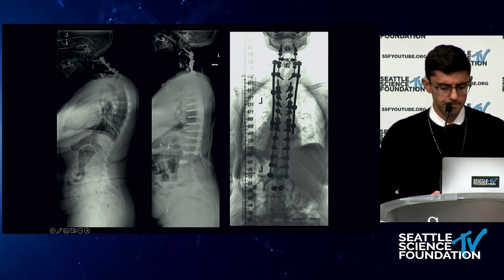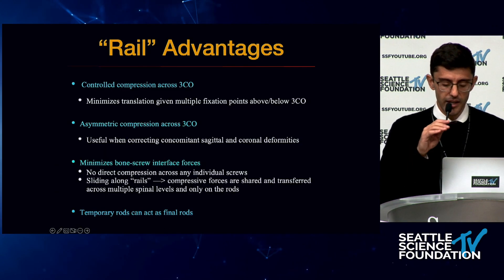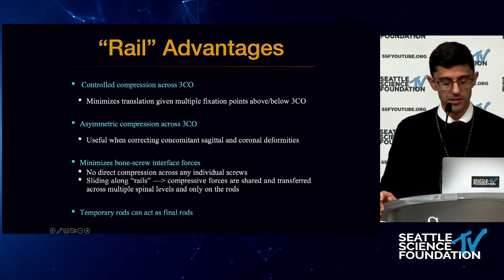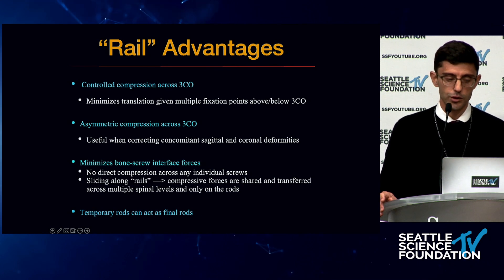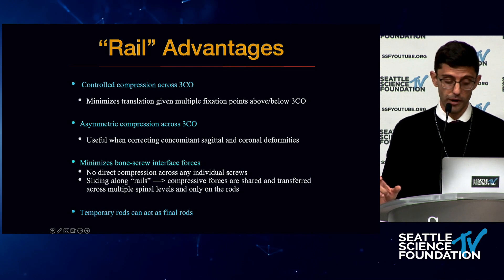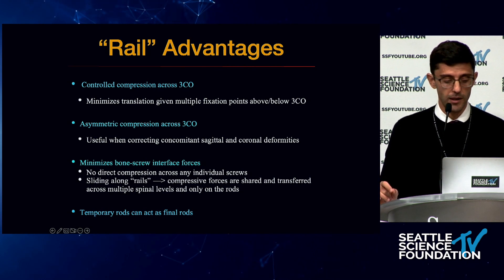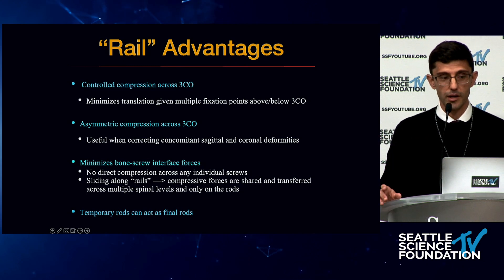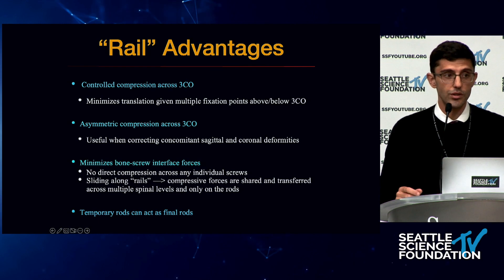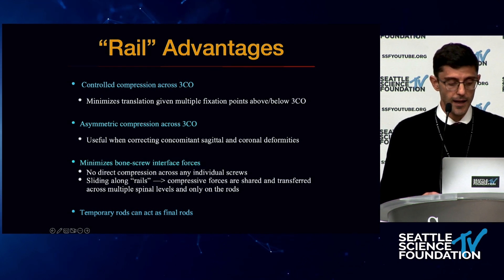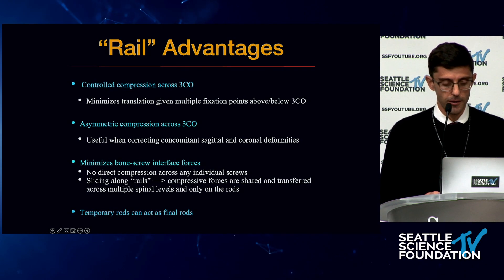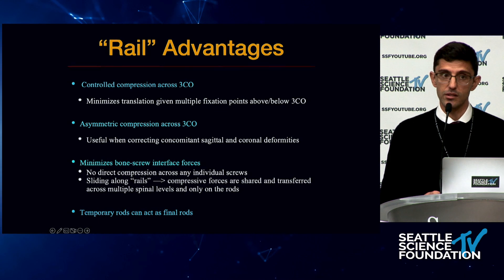The advantages of the rail technique: it provides controlled compression across the three-column osteotomy site, minimizes translation given multiple fixation points above and below, allows asymmetric compression to correct both sagittal and coronal deformities, minimizes bone-screw interface forces with no direct compression across any individual screws, and stresses are transferred along the rails. The temporary rods ultimately act as your final rods.